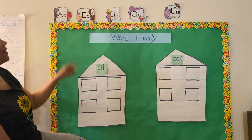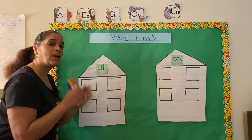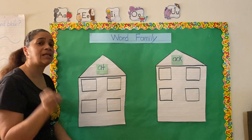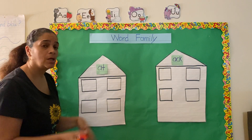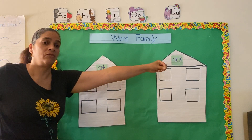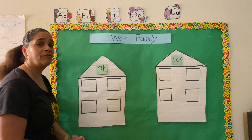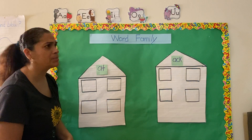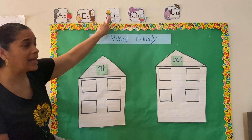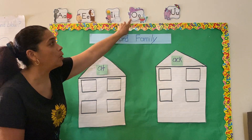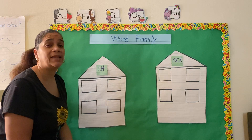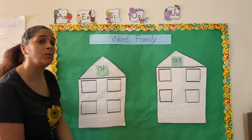Those are our short vowel sounds. Remember in class, we learned that our vowels have two sounds: a short vowel sound and a long vowel sound. And that long vowel sound just says its name. So A, E, I, O, and U are their vowel sounds when we say it's a long vowel sound.